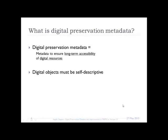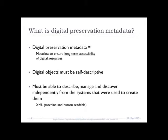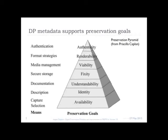Digital objects must be self-descriptive in some way. If you have just digital objects by themselves as bit sequences, they don't make sense. If I open a book I can find enough information to see what it's about, but with a digital object that's not necessarily the case. So we need to associate metadata with it that enables us to describe, manage and discover the digital object independently from the systems that were used to create them. XML is frequently used to capture this metadata because it's machine and human readable, but PREMIS does not depend on XML — it is just one popular way of describing digital preservation data.